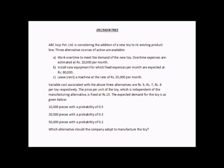The question is which alternative the company should adopt to manufacture the toy. We'll use a decision tree to solve this problem. To summarize: there are three manufacturing options with fixed costs of ₹20,000, ₹80,000, and ₹35,000; variable costs of ₹9, ₹7, and ₹8; a sales price of ₹15; and demand probabilities of 0.5 for 10,000 units, 0.3 for 20,000 units, and 0.2 for 50,000 units.